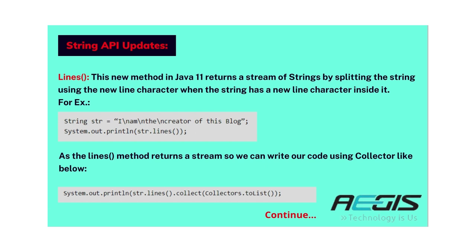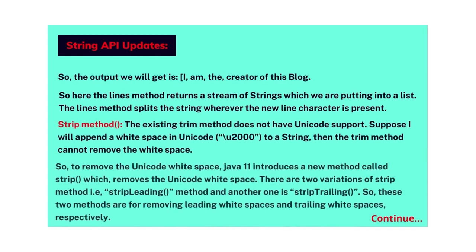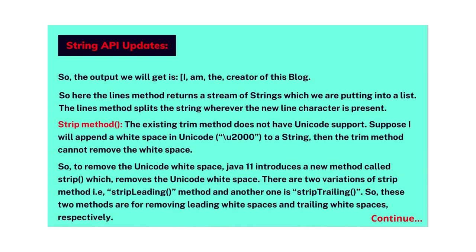Since lines() returns a stream, we can write our code using collectors. The output will be individual lines such as 'I am the creator of this blog.' The lines() method splits the string wherever a newline character is present. Third is the strip() method. The existing trim() method does not have Unicode support — for example, if you append the Unicode whitespace U+200B to a string, trim() cannot remove it. So Java 11 introduces the strip() method, which removes Unicode whitespace. There are two variations: stripLeading() and stripTrailing(), which remove leading and trailing whitespace respectively.